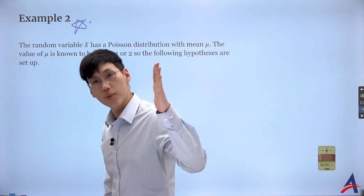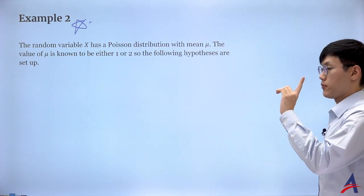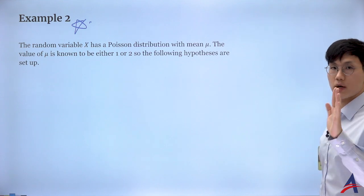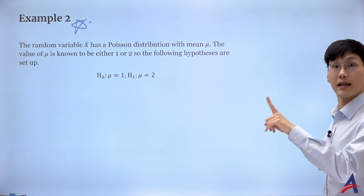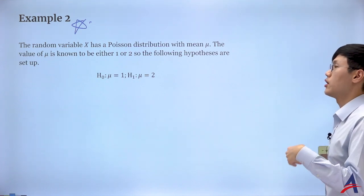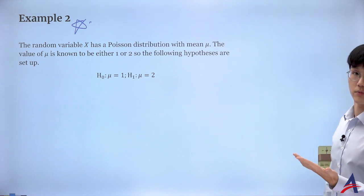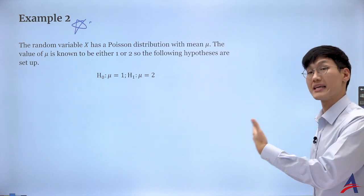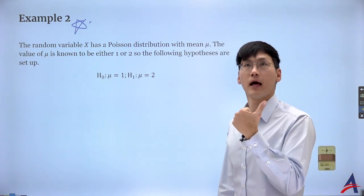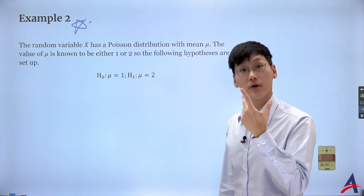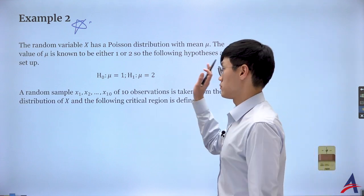We've covered normal, binomial, and Poisson distributions. For normal and Poisson, they will likely tell you the distribution explicitly. For binomial, as we saw in the 2022 November exam, they may not state it — you need to recognize it from independent trials (Bernoulli), fixed number of trials, and fixed probability of success.